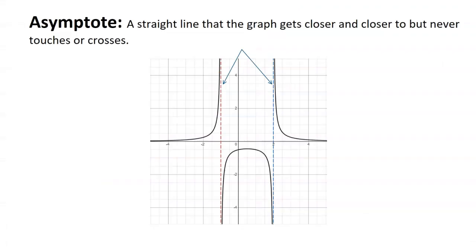An asymptote is a straight line that the graph gets closer and closer to but never touches or crosses. The black line is the actual graph; the other two lines are vertical lines I've drawn and added so you can see more clearly — they're labeled with arrows. It's useful to draw the line in, so I graphed x equals negative one and x equals two, then went into the settings and changed them to dotted lines.